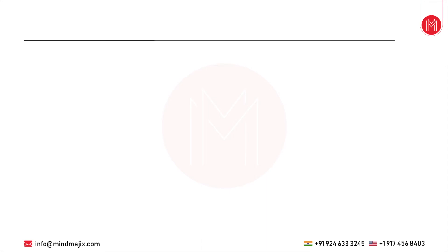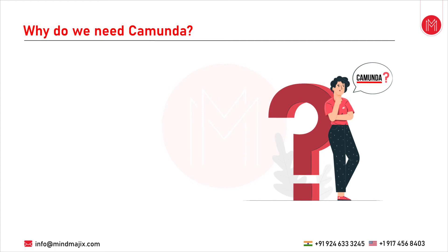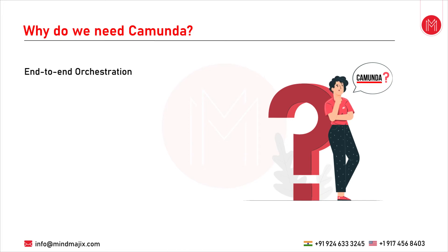Now you must be wondering why at all do we need Camunda, or why you should select Camunda among its competitors. There are four reasons why you should select Camunda. The first is end-to-end orchestration — with Camunda you can design, automate and improve all components of the entire business process end-to-end across different technologies, systems, infrastructures, people and devices.